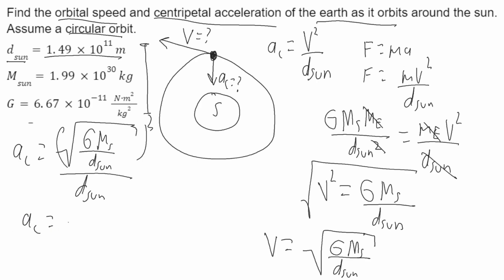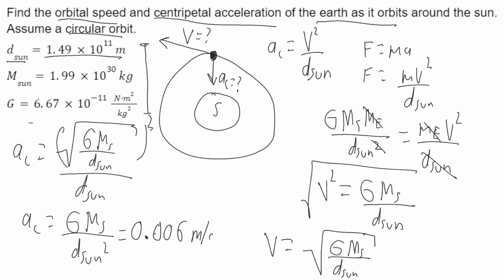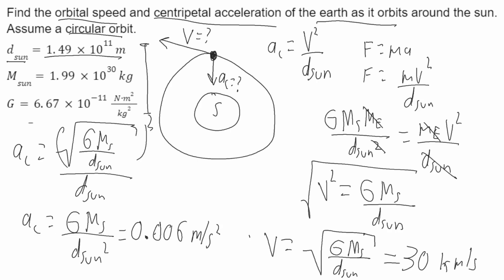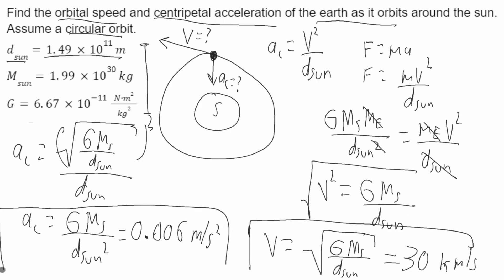So the centripetal acceleration equals G times the mass of the sun over the distance of the sun squared. Plugging in all the numbers, the centripetal acceleration is 0.006 meters per second squared, and the orbital velocity is 30 kilometers per second. Those are your final answers. Thank you for watching.